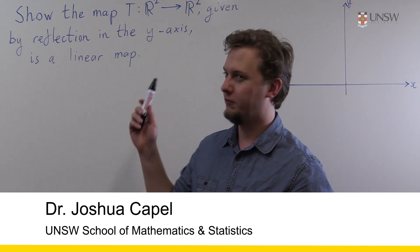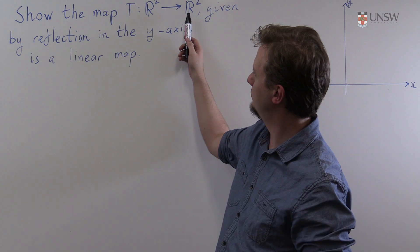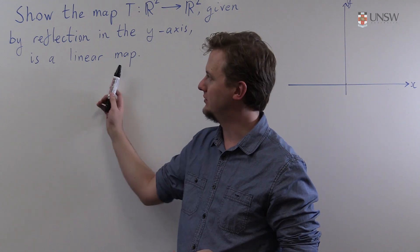Welcome. In this video we're going to consider the following question. We want to show that the map from R² to R² given by reflection in the y-axis is a linear map.